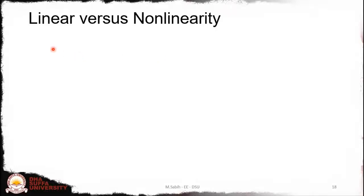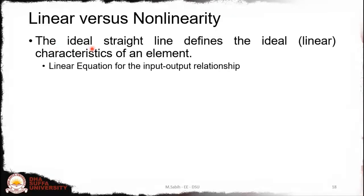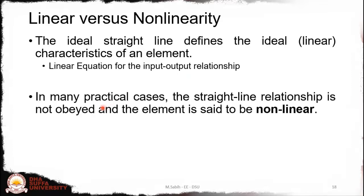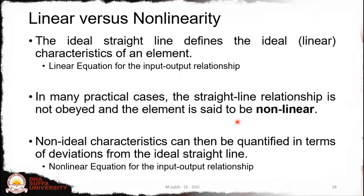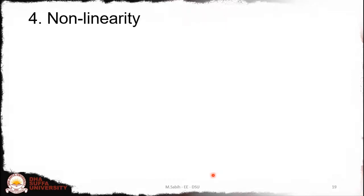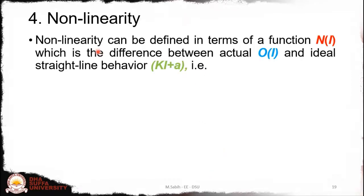In terms of linear versus nonlinearity, the ideal straight line defines the ideal linear characteristics of an element. The linear equation describes the input-output relationship, but in many practical cases this straight-line relationship is not obeyed and the element is said to be nonlinear. Nonlinear characteristics can then be quantified in terms of deviations from the ideal straight line. The nonlinearity is defined in terms of the function n(i), which is the difference between actual output and the ideal straight line.